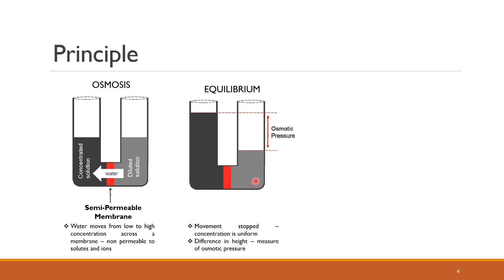The flow of water across this membrane stops when equilibrium is reached. Equilibrium means that the concentration of the solute on either side of the semi-permeable membrane is uniform — when the concentration is equal, movement stops. And here you can see a difference in height, which gives you the difference in pressure across these two points. That is called the osmotic pressure.